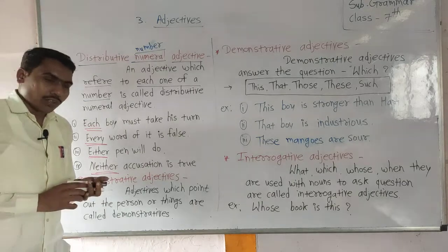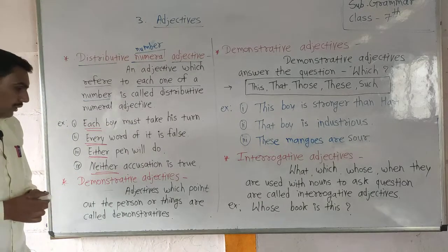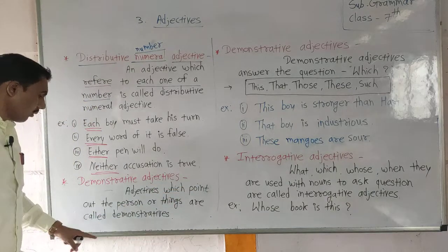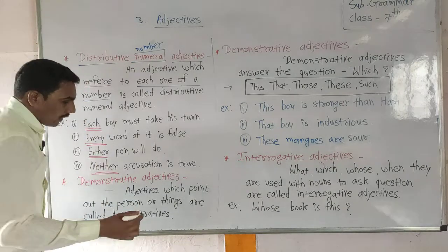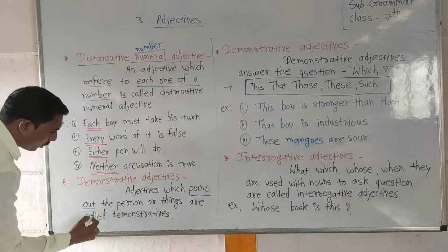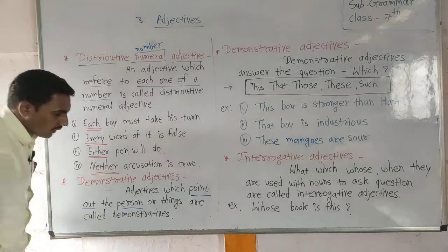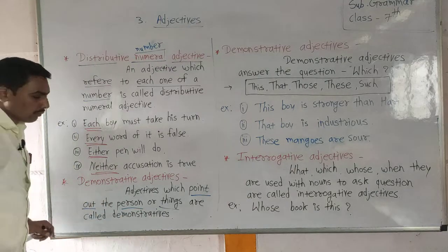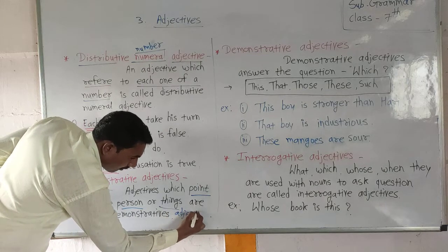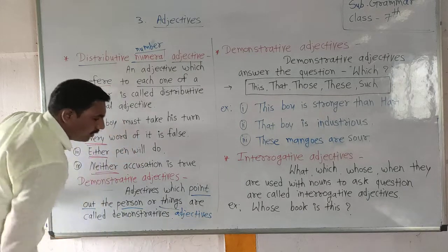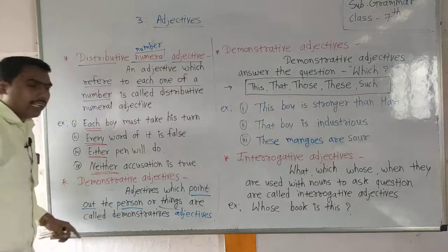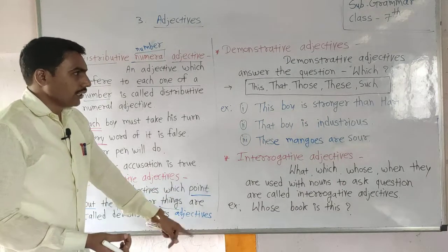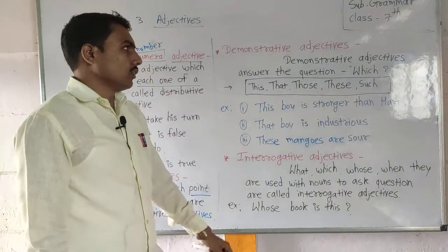Next, demonstrative adjectives. What is meant by demonstrative adjectives? An adjective which points out the person or things is called a demonstrative adjective. Simply put, the adjective which points out a person or thing is called a demonstrative adjective.